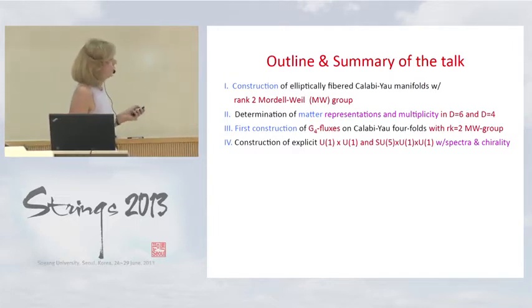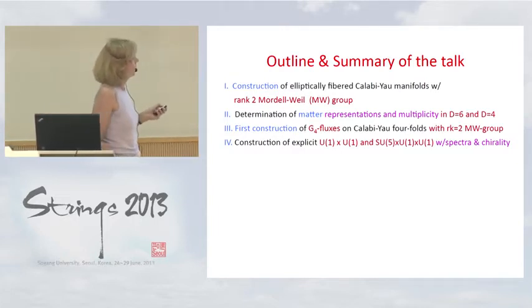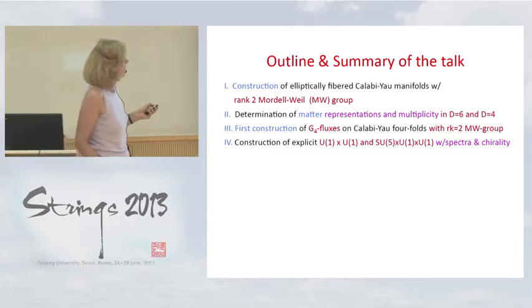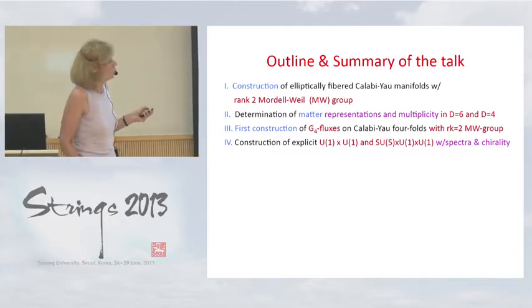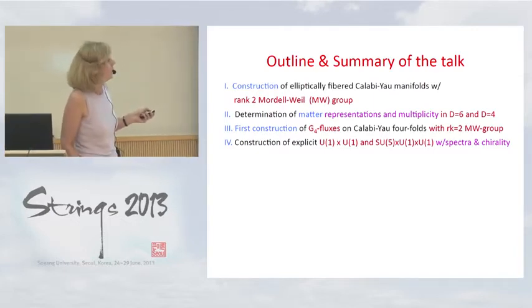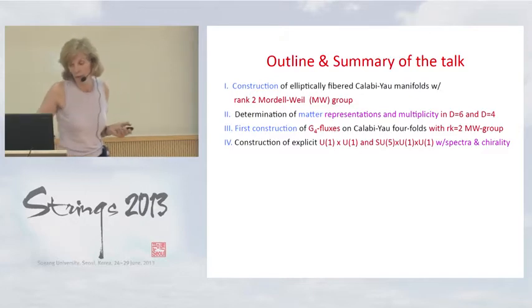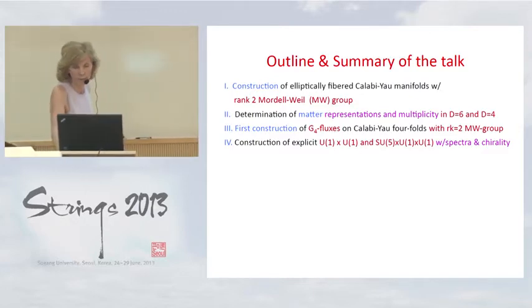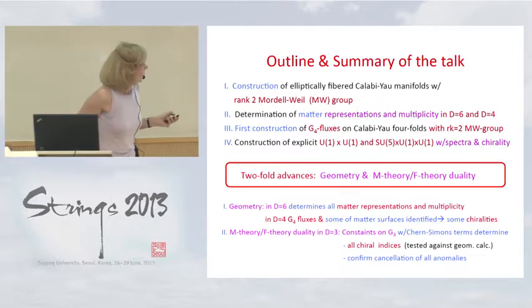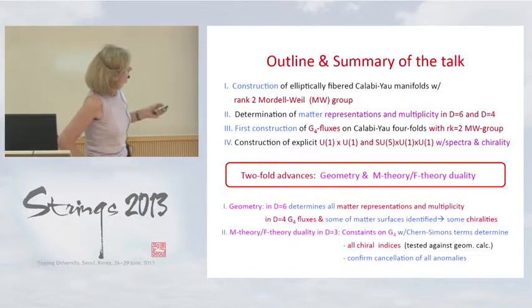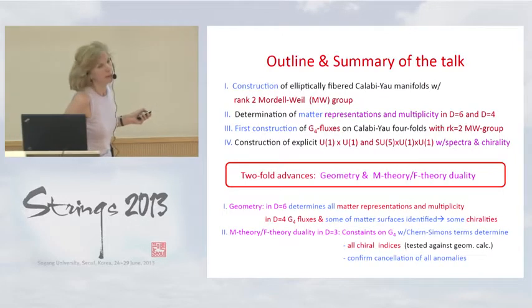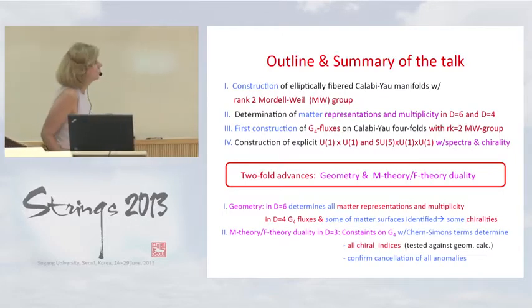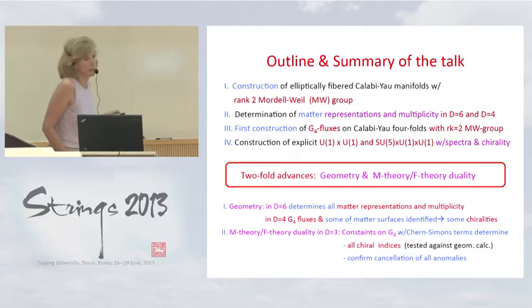As a consequence, we obtain explicit constructions with generic U1 cross U1 gauge symmetry, as well as grand unified symmetries with two additional U1 factors. In this context, there are two important advances: one from the point of view of geometry, and another from duality.